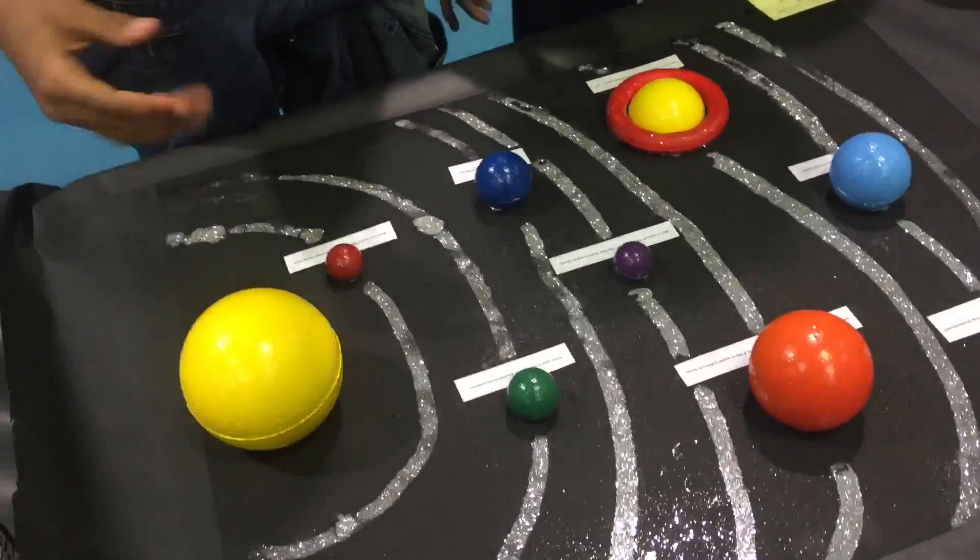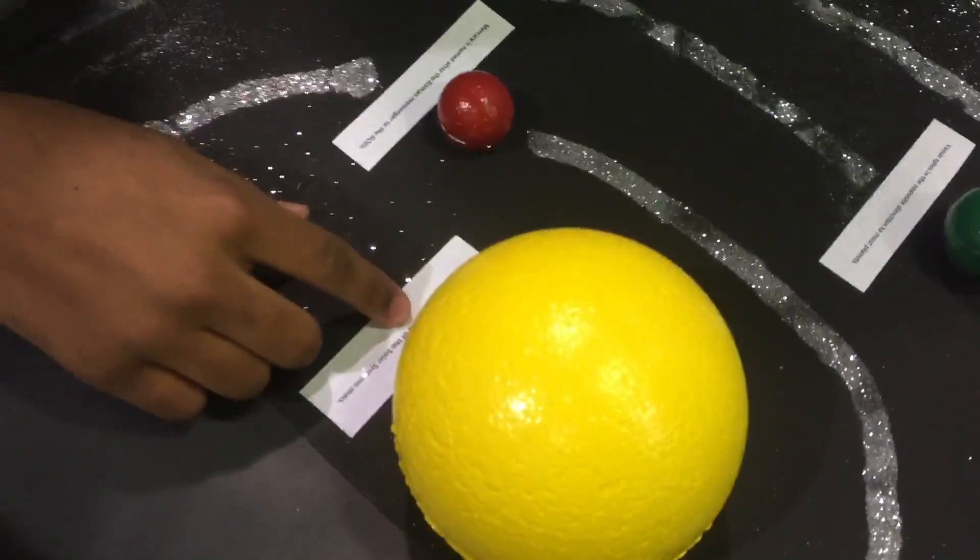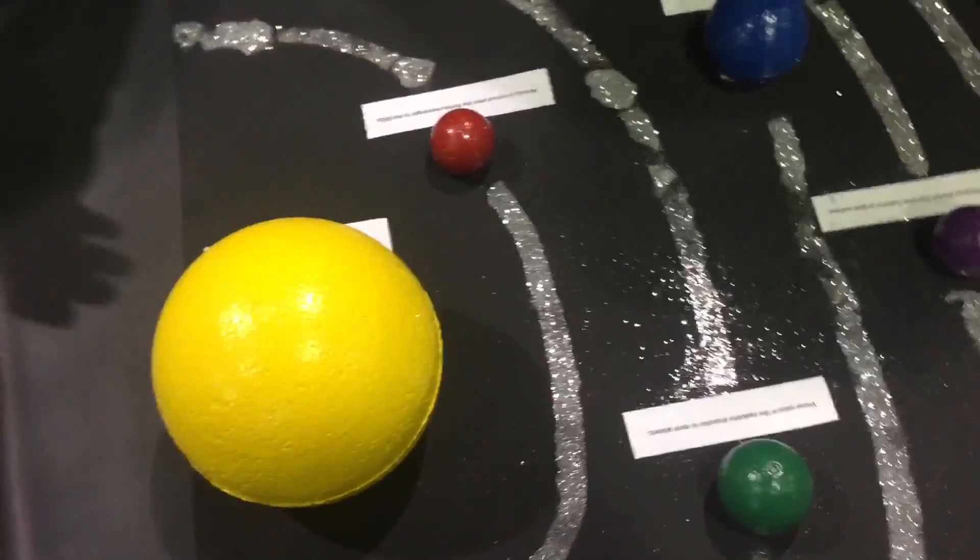Okay, this is the solar system and these are some fun facts. The Sun makes up 99.86% of the solar system's mass.